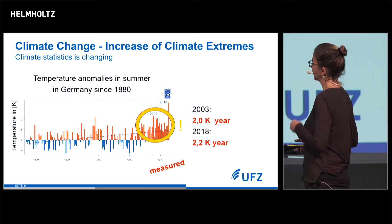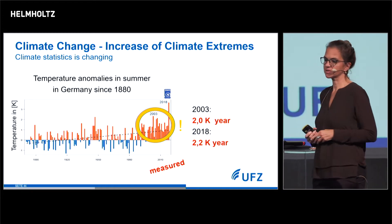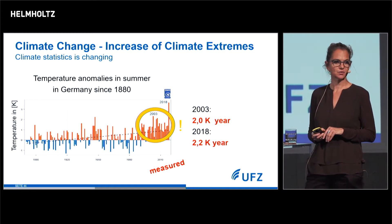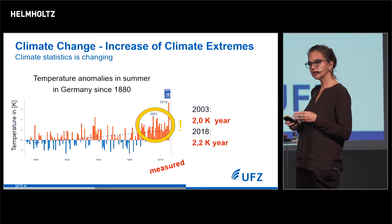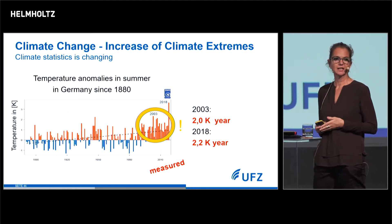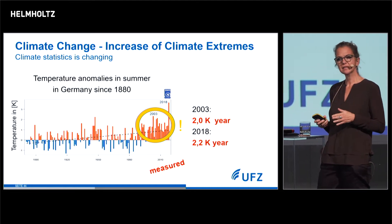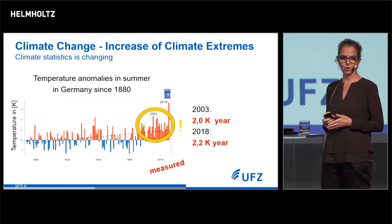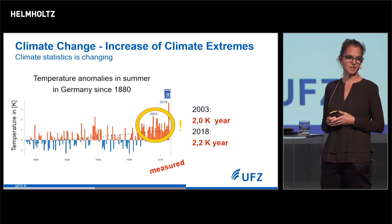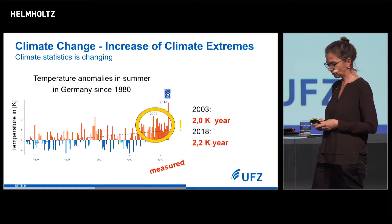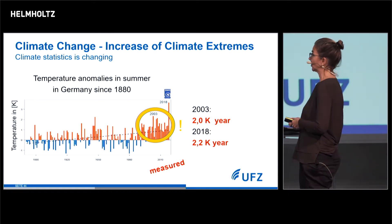In particular, the summers of 2003 and 2018 were pretty hot and pretty dry. On the mean, these were two-degree years. So this is the world we expect if we go to a two- or three-degree world.